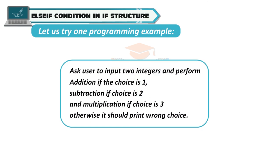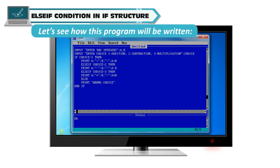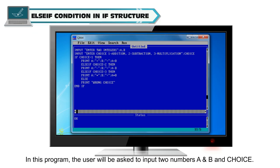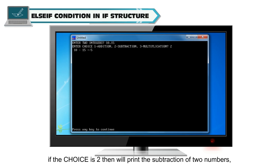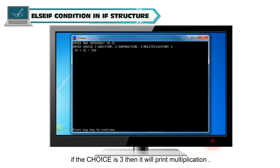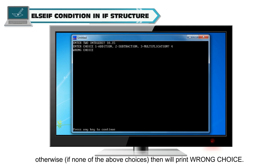Programming example: Ask the user to input two integers and perform addition if choice is 1, subtraction if choice is 2, multiplication if choice is 3, otherwise print "wrong choice". In this program the user inputs two numbers a and b and a choice value. IF choice = 1, it prints the addition; IF choice = 2, the subtraction; IF choice = 3, the multiplication; otherwise it prints "wrong choice".